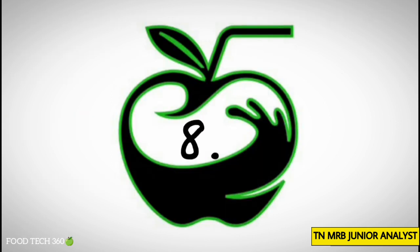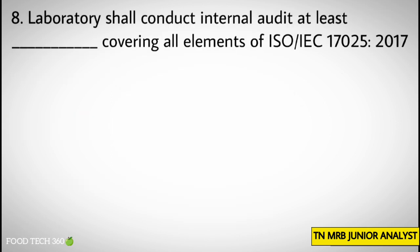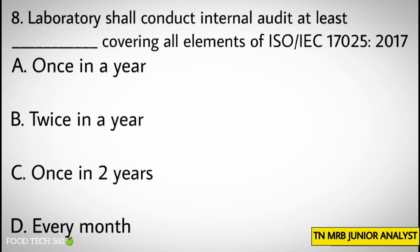Question number 8. A laboratory shall conduct an internal audit at least dash, covering all elements of ISO/IEC 17025:2017. Options: A. Once in a year, B. Twice in a year, C. Once in two years, D. Every month.